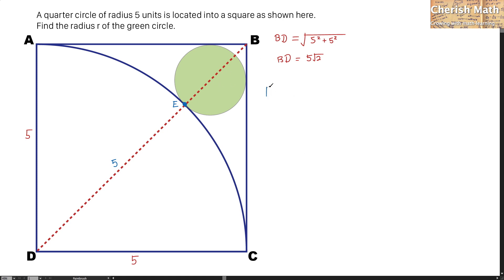That would be BE is the same as the entire length of BD minus ED. So BE turns to the value of BD, which is 5√2, minus ED which is the radius of the quarter circle, and it is 5.